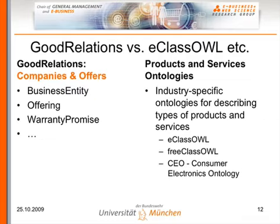Now, what's the relationship between Good Relations and ECLAS-O and other ontologies for e-commerce? ECLAS-O is an ontology for products and services. I derived it in 2006 from a classification standard called ECLAS. It provides 30,000 classes for defining the nature of products — the types of products — defining classes like camcorder, pencil, car, projector, tripod, and their respective features. So with ECLAS-O and other ontologies for products and services, you can describe what an object is and the features of that very object.